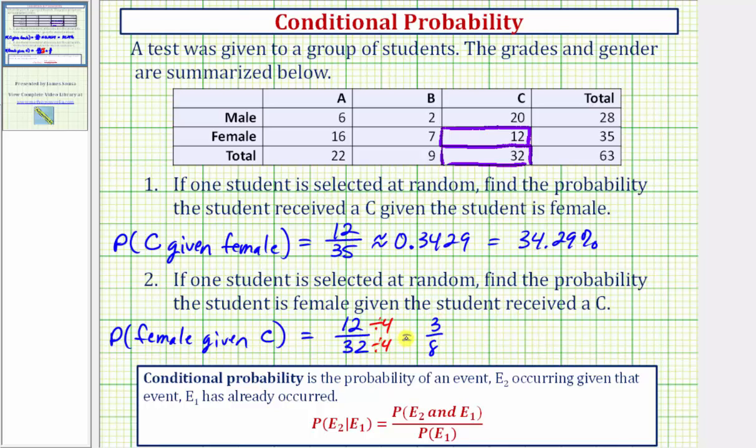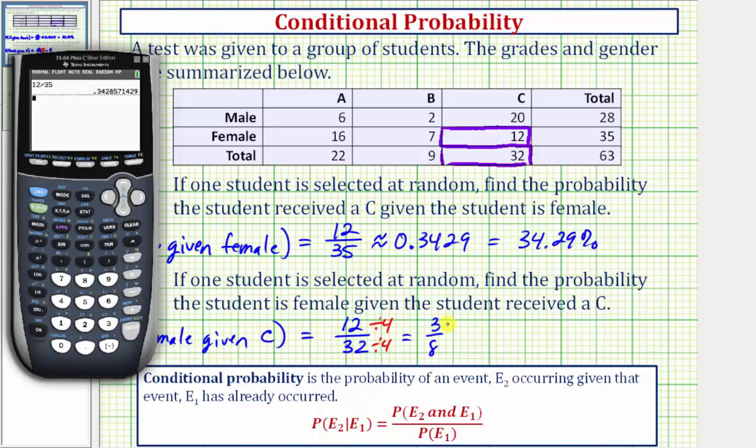Of course, we can check this on the calculator. To do this, we would enter 12 divided by 32, enter. Then if we press math, enter, enter, it'll give us the fraction back in simplified form. Verifying 3/8 is the simplified probability as a fraction.